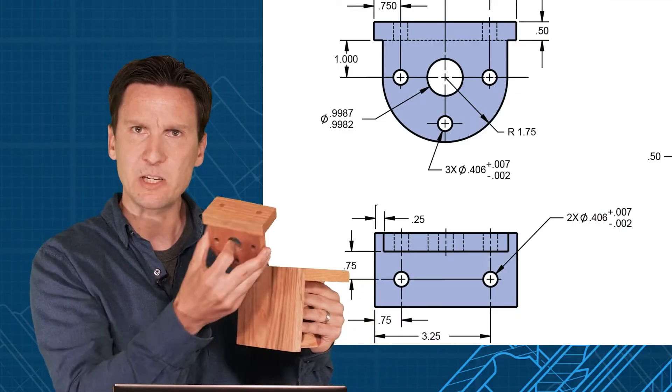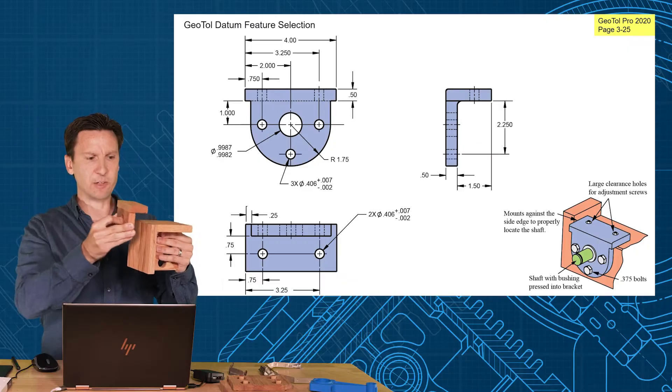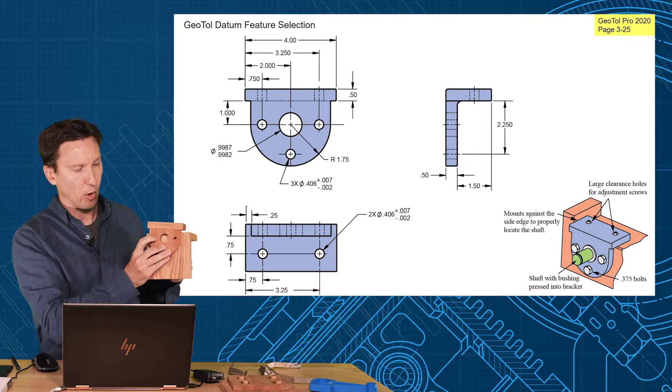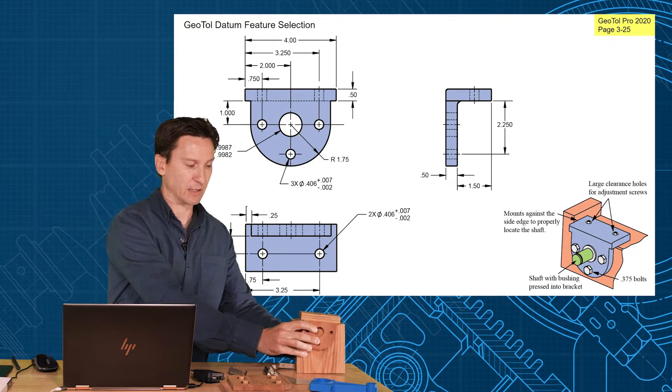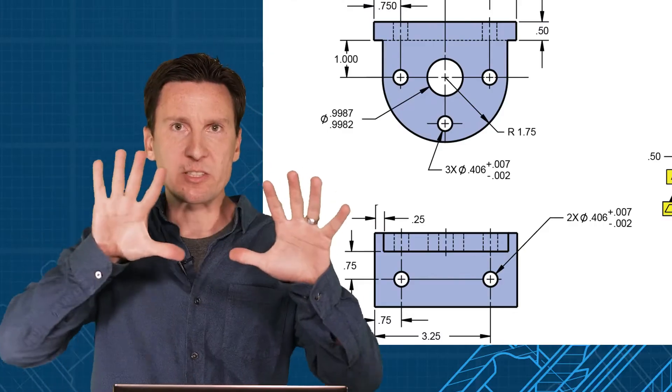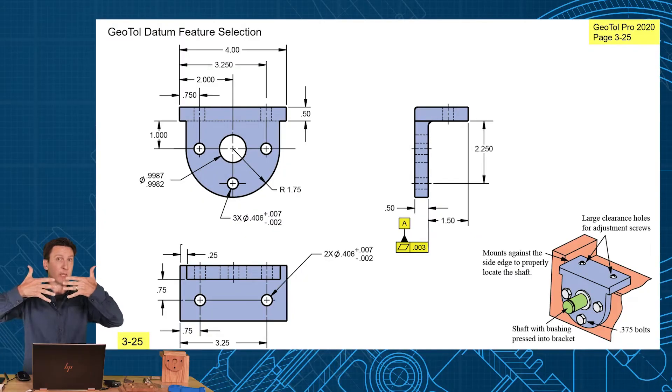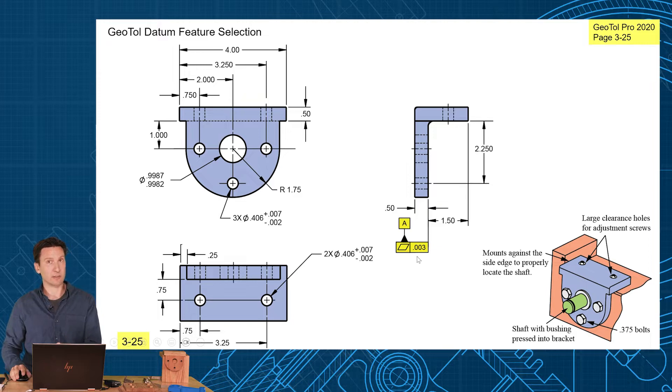So what sets up the initial attitude of the part? How does it get mounted in the assembly? Those three big bolts are always going to be pulling it up against that face. That's why I selected that as our primary datum feature. It really sets the attitude, biggest surface on the part. So we're going to pick that as A, put a nice flatness tolerance on it.